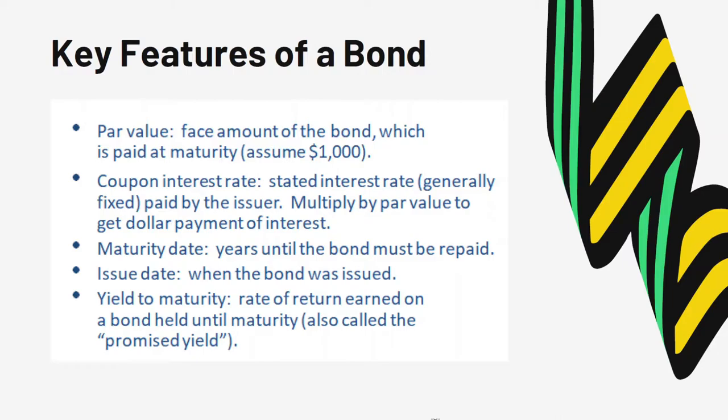At maturity the bond holders will be repaid with the principal amount, or the face value of the bond. Yield to maturity is the rate of return earned on a bond if investors hold the bonds until it matures. It is also called the promised yield because the actual rate of returns on bond investment might be different from the yield to maturity calculated from the bond valuation model.